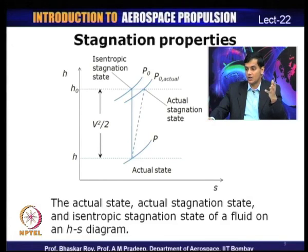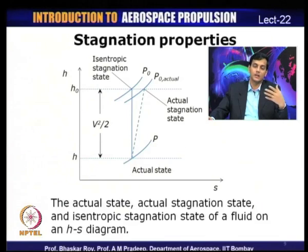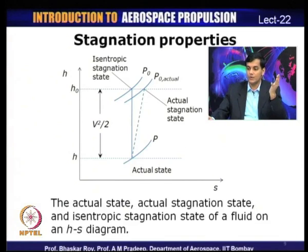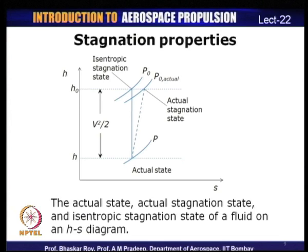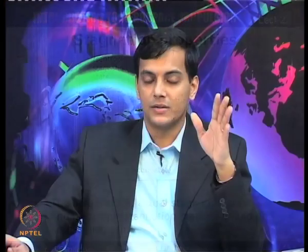If the process is not isentropic — with frictional losses and irreversibilities — it cannot remain isentropic, and for an actual stagnation state there must be an increase in entropy. There will be a positive slope for that process, but since there are no heat or work interactions, enthalpy cannot change. However, because of irreversibilities, the process is non-isentropic and there will be some pressure loss.